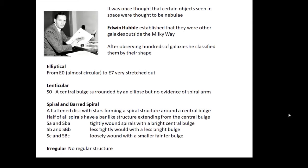Hubble looked at hundreds of galaxies and classified them by their shape. The different types of galaxies are: elliptical, lenticular, spiral, and irregular. Elliptical galaxies are ellipse-shaped, ranging from E0 to E7. Lenticular galaxies are shaped a bit like a lentil — they have a bulge inside an ellipse, but no spiral arms.